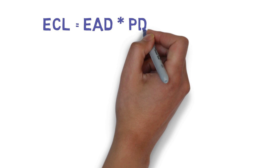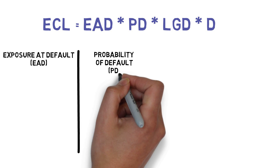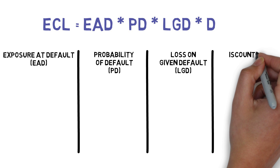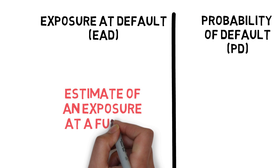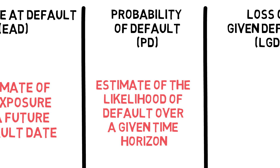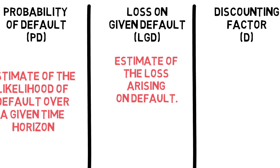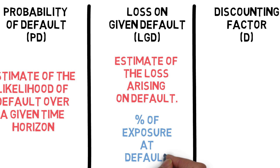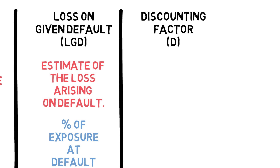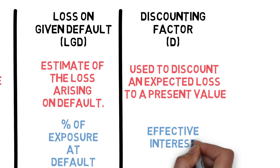ECL is computed as the present value of the product of Exposure at Default (EAD), Probability of Default (PD), and Loss Given Default (LGD). Exposure at Default is the estimate of exposure at a future default date. Probability of Default is the estimate of the likelihood of default over a given time horizon. Loss Given Default is the estimate of the loss arising on default, expressed as a percentage of the Exposure at Default. A discounting factor — generally the effective interest rate — is used to discount the expected loss to present value.